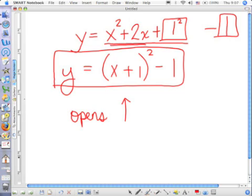If there's no number in front of here, what's it understood to be? It's understood to be 1. And the vertex of this parabola can now be identified. What is it? Negative 1, negative 1. Yes.